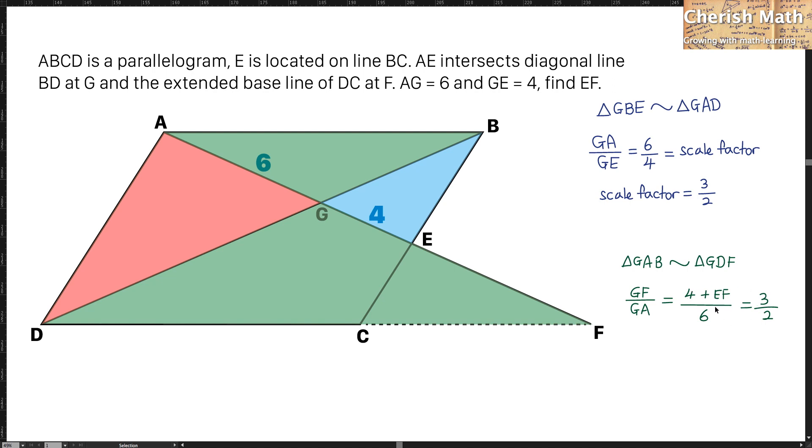So, when I do the cross multiplication here, the value of EF that I am getting here is 5 units. I solved the puzzle.